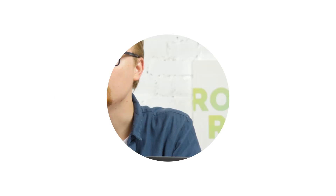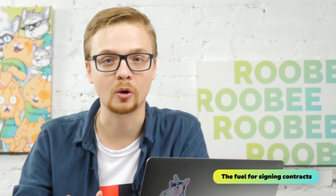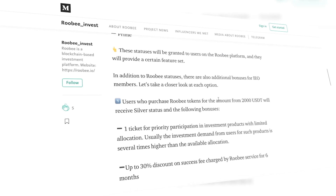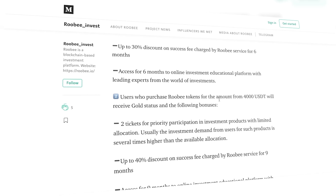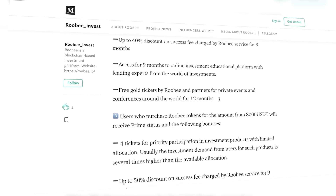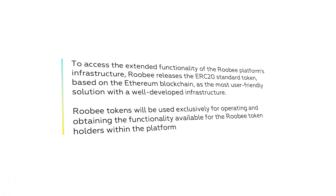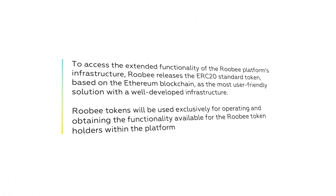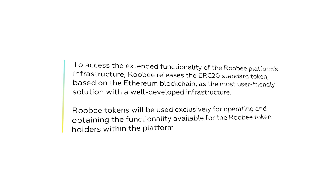First of all, tokens are the fuel for signing the contracts — and do you remember, contracts are named chain codes. Also, depending on the number of tokens held, users will receive certain statuses on the platform, and for that we will have a special video on our YouTube channel. To access the advanced functionality of the Ruby platform, Ruby releases the ERC20 token based on the Ethereum blockchain, being the most convenient option with well-developed infrastructure.